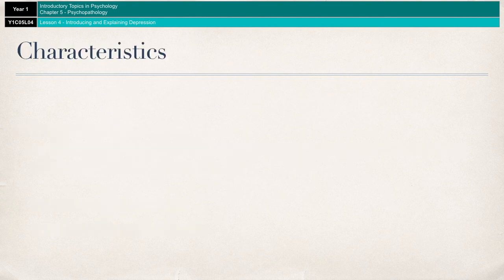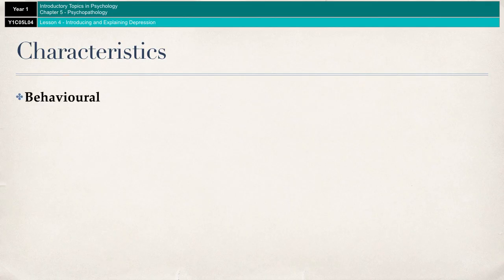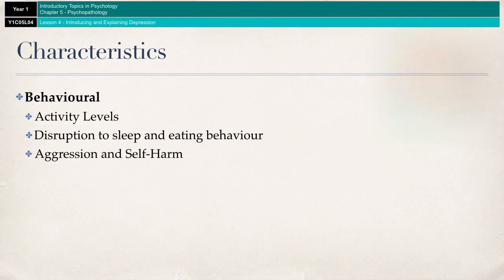Moving on to the characteristics — as with phobias and also with OCD, both of which are covered by the AQA A-level specification, there are three different sections of characteristics. First off, we'll have a look at the behavioral characteristics.